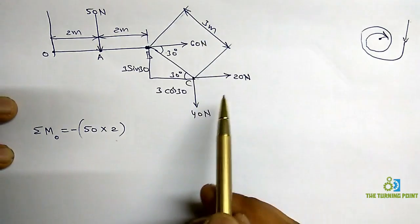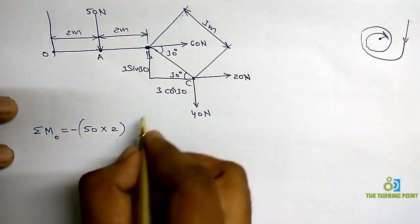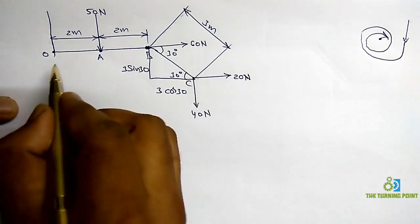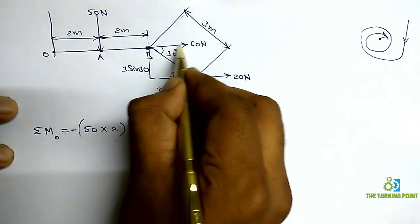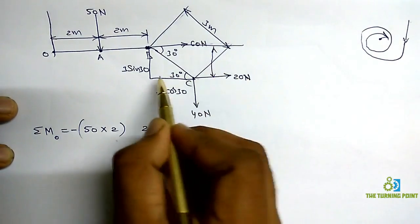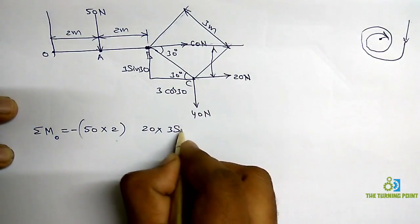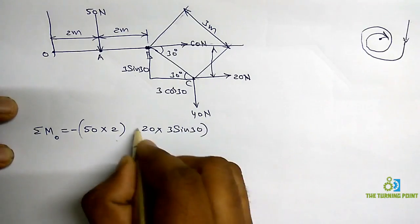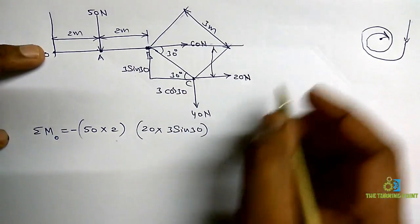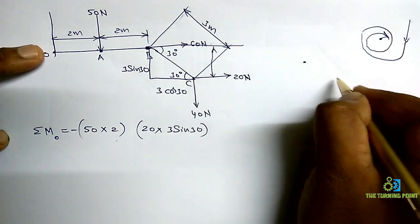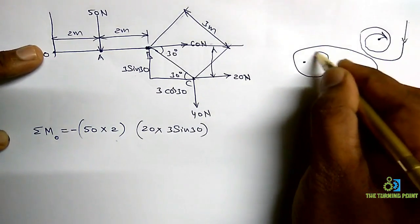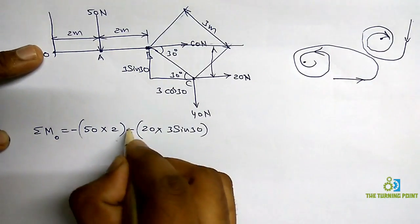Next we consider the 20 Newton force. 20 into perpendicular distance. Drawing a line through the moment center parallel to the force, the perpendicular distance is 3 sin 30. Circling the moment center in the direction of the force gives anticlockwise — so that is positive.